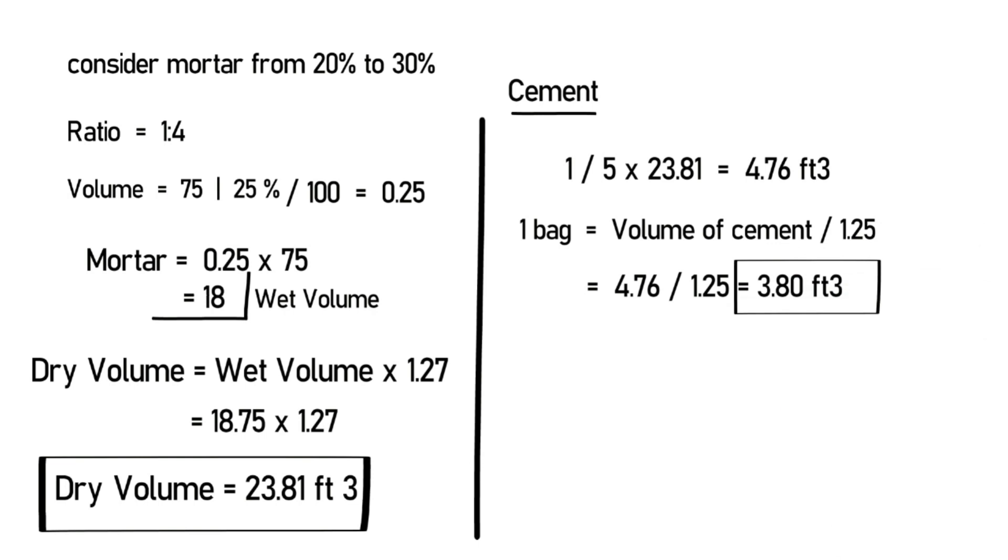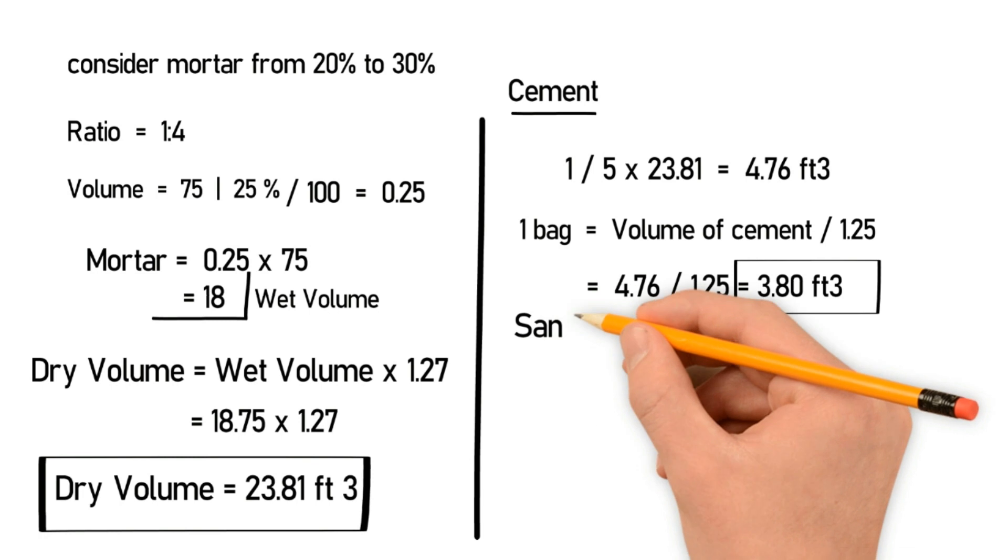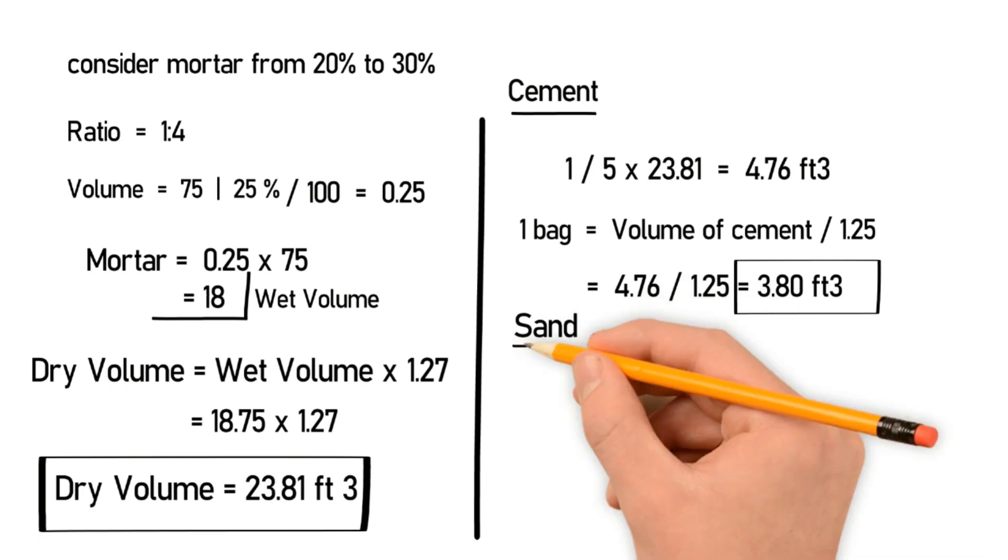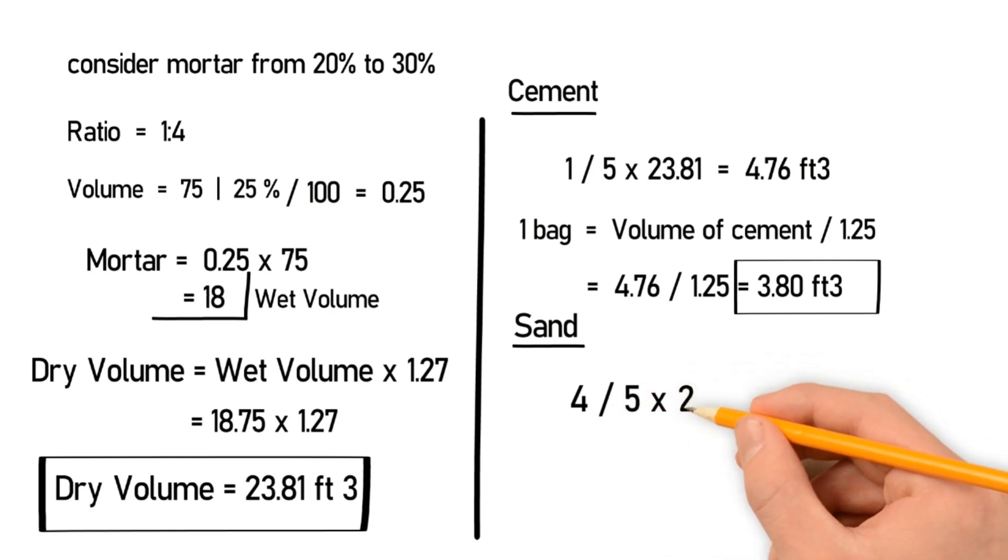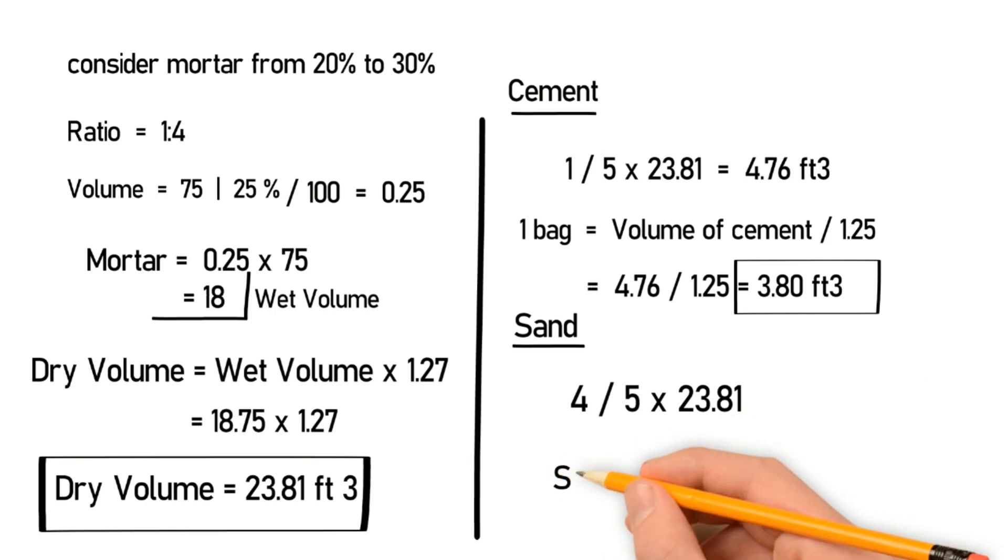Let's calculate the sand. Sand is 4 in the ratio, 1:4. So this will become 4 divided by 5 multiplied by the dry volume of the mortar, which is 23.81. So the sand will be 19 cubic feet.